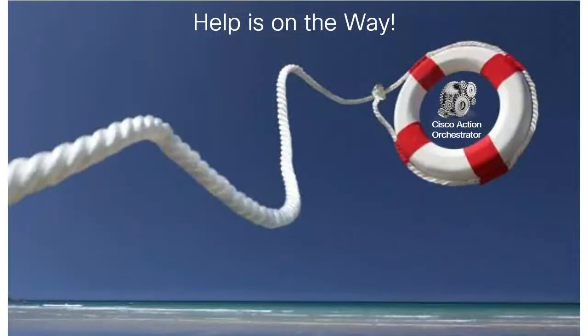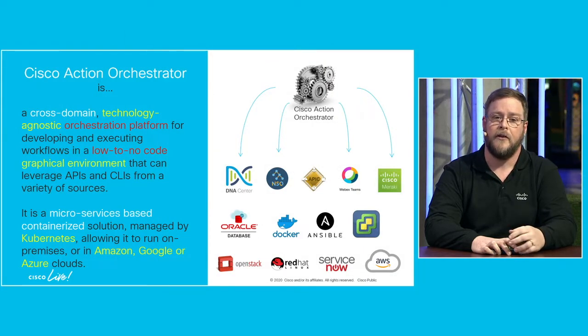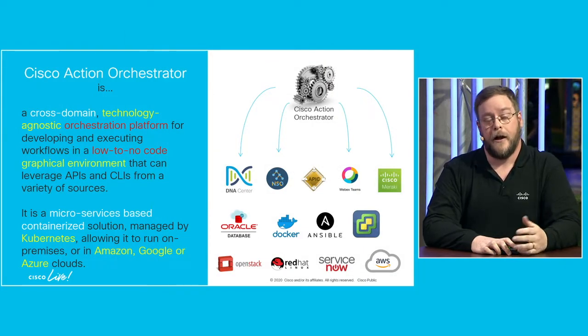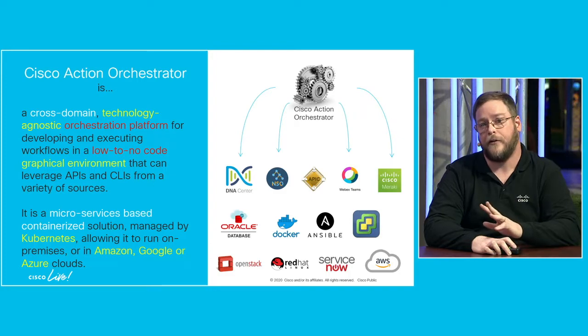Help is coming from Cisco Action Orchestrator. This tool is a cross-domain, technology-agnostic orchestration platform with a low-to-no-code graphical environment to build workflows by dragging and dropping activities into a canvas, following a workflow just like a process or flowchart. It's a microservices-based containerized solution using Kubernetes to manage Docker containers. You can run it on-prem, in Amazon, Google, or Azure clouds, and it has many adapters.